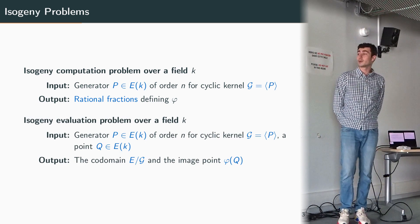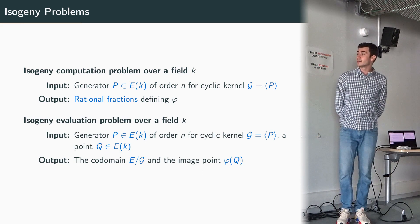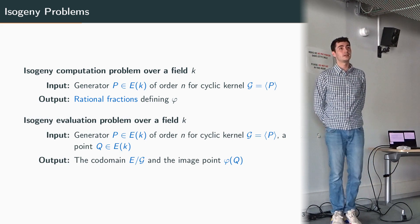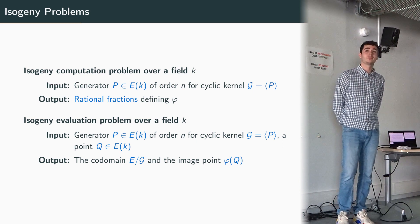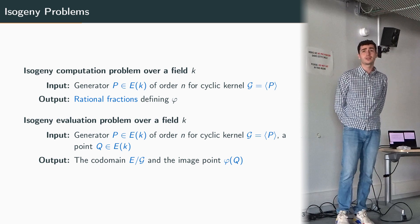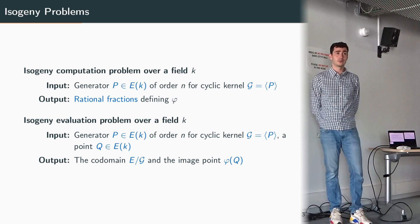But in fact we are not very interested in this problem. We'd rather solve the isogeny evaluation problem which is: given a generator P and some other point Q, the goal is to find the code domain E mod G and the image point phi of Q. This is quite fortunate because this problem allows more room for improvements.